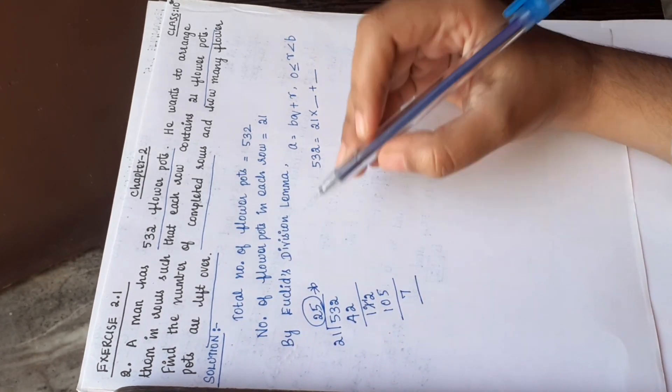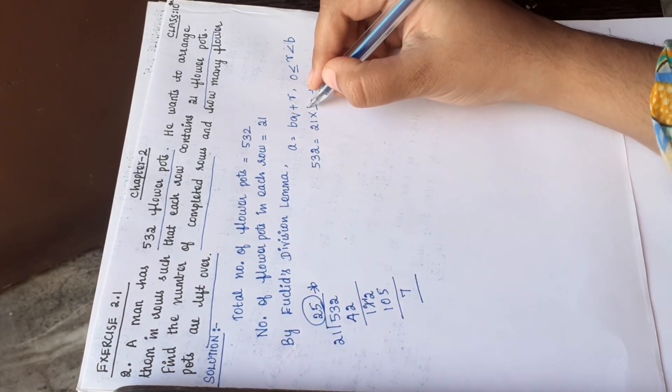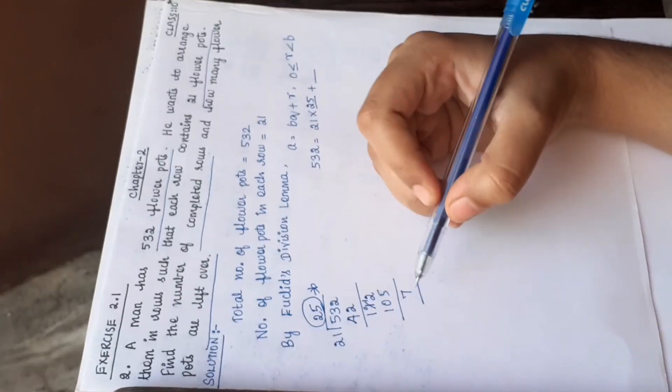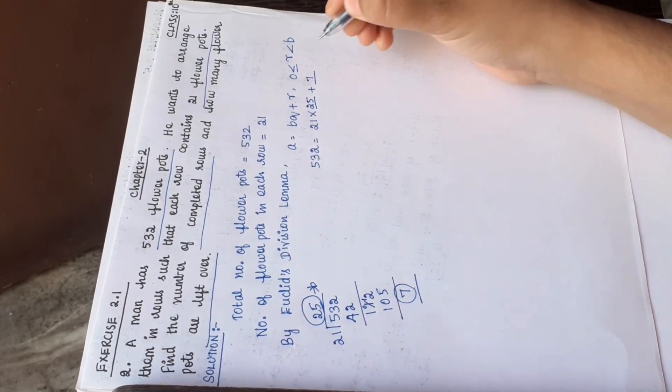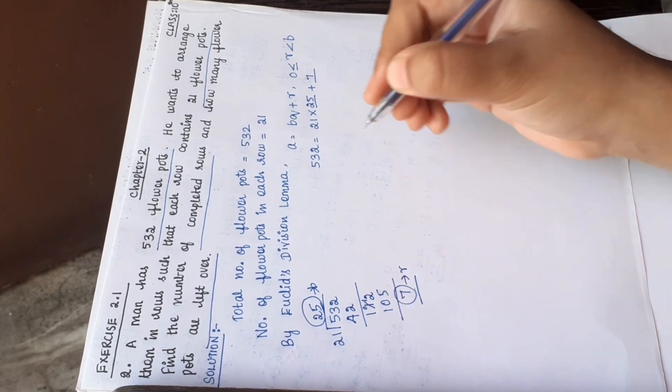Number of completed rows 25 and remainder 7. 7 is the remainder, so from this therefore,